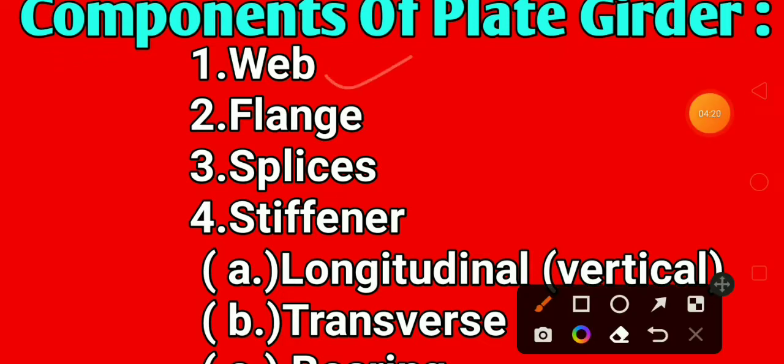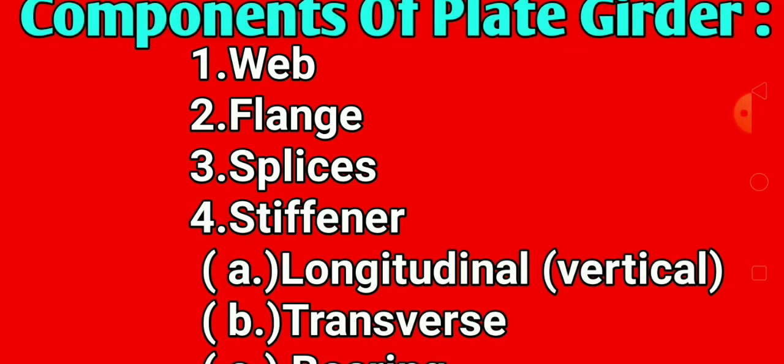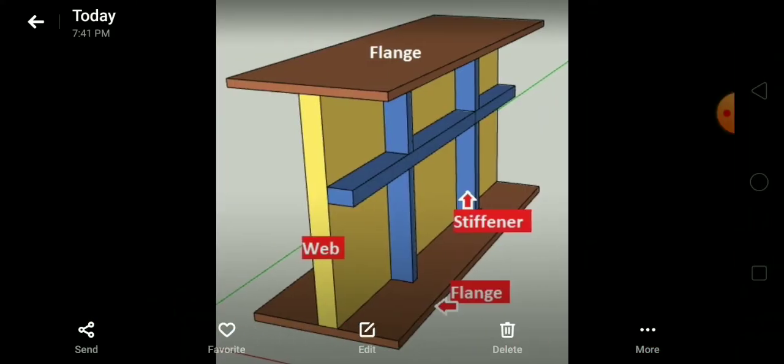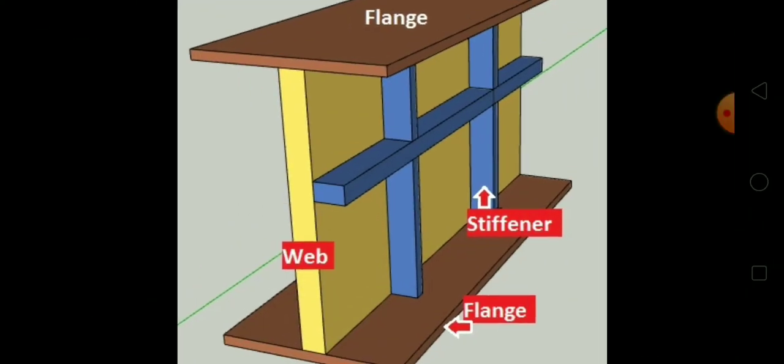Okay, so first was web, second was flange, third was splashes I already shown you. So I will see you again, you can see in this video, you can see in this photo. Okay, so this is a flange, flange, web, stiffener.